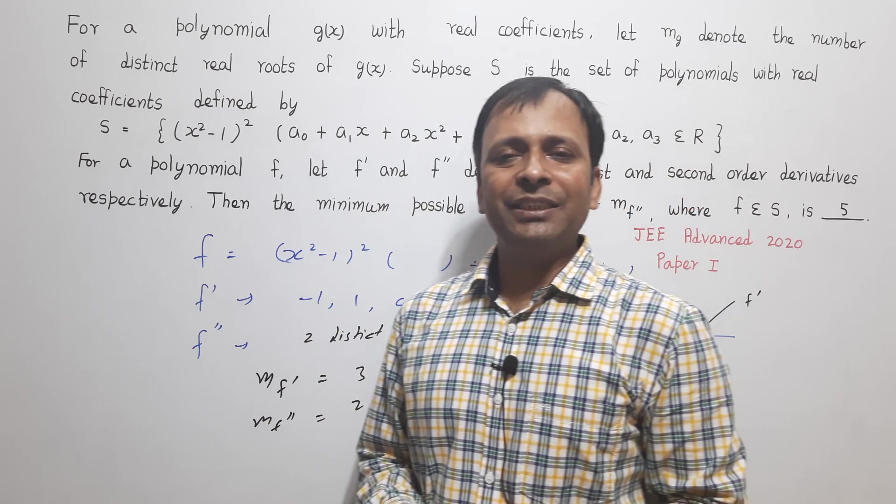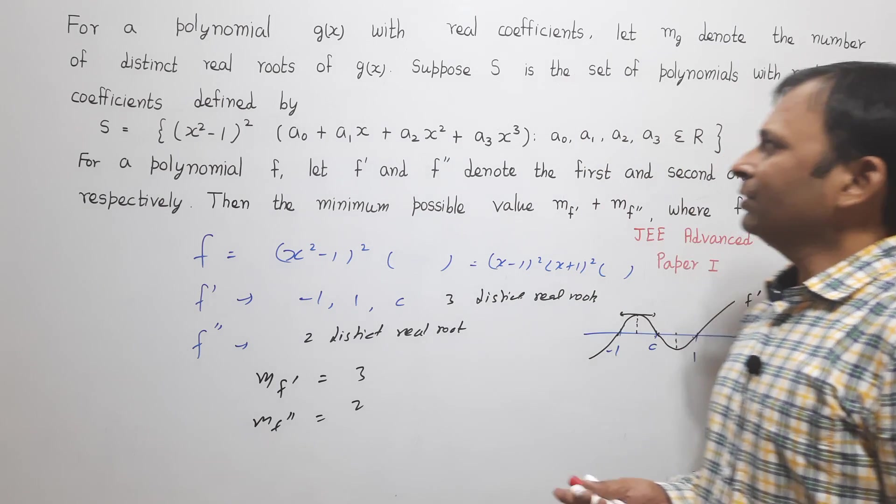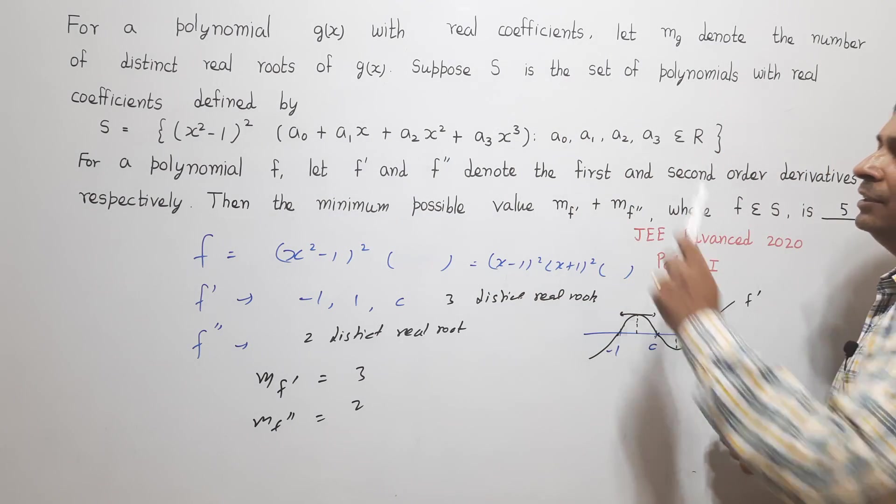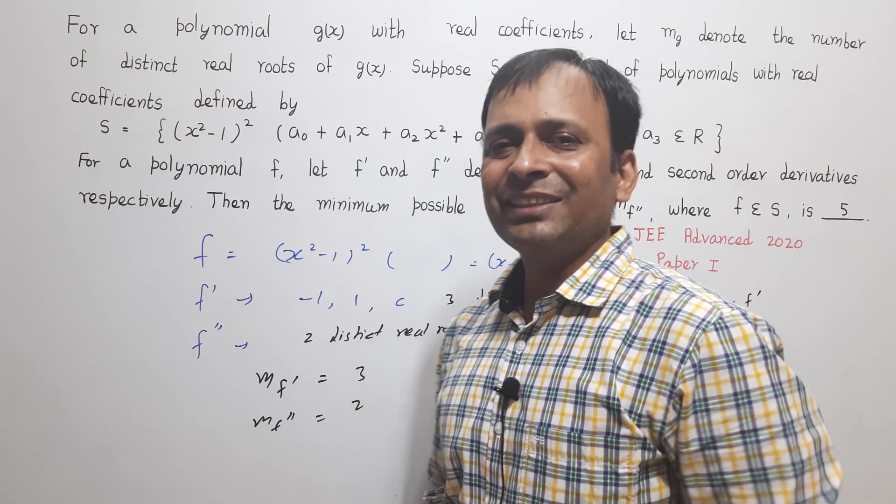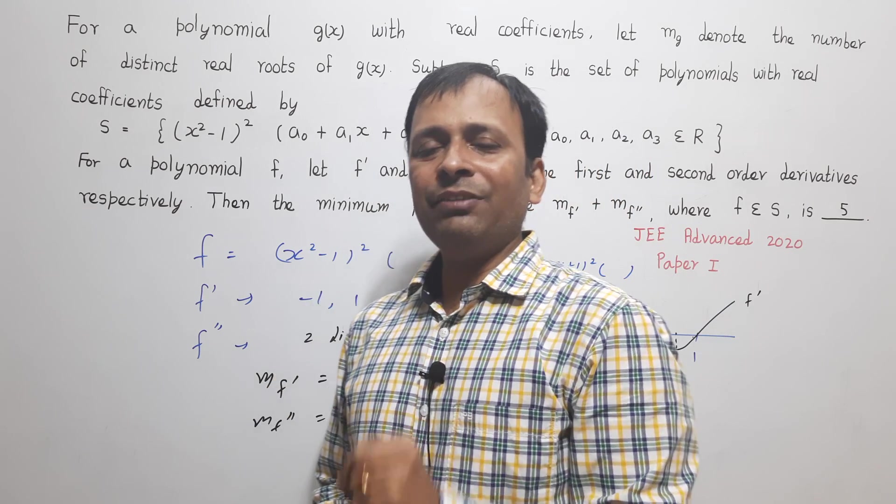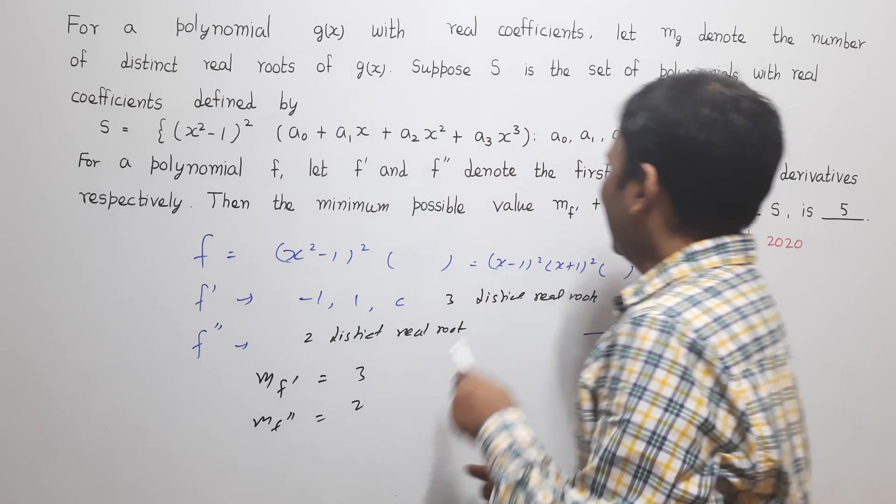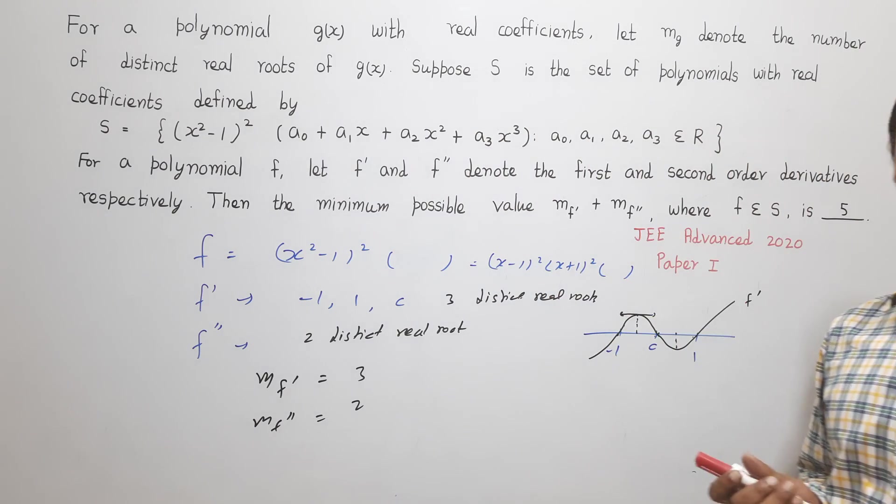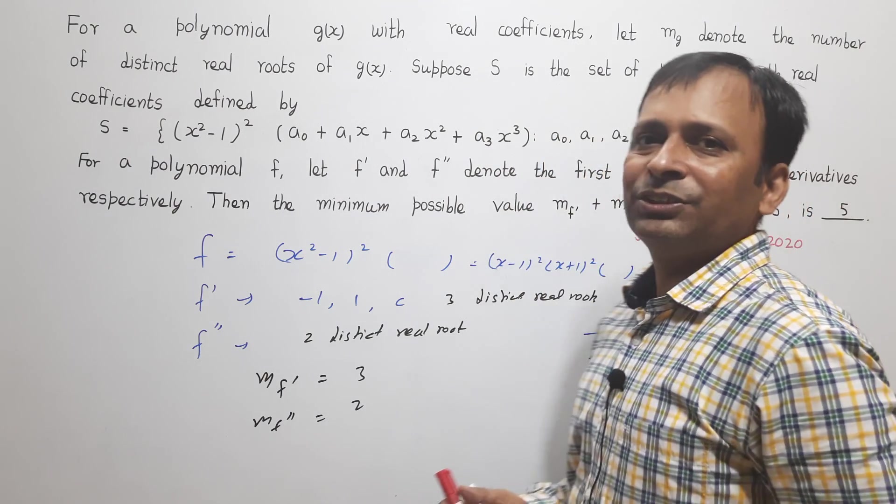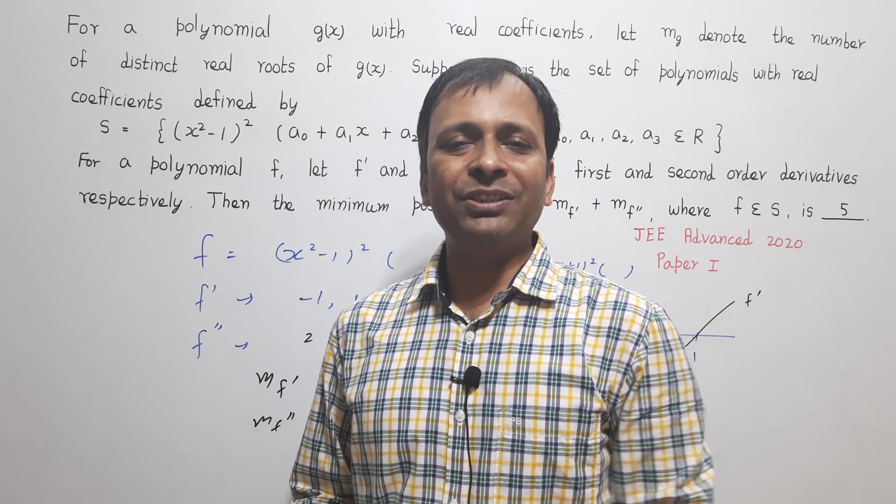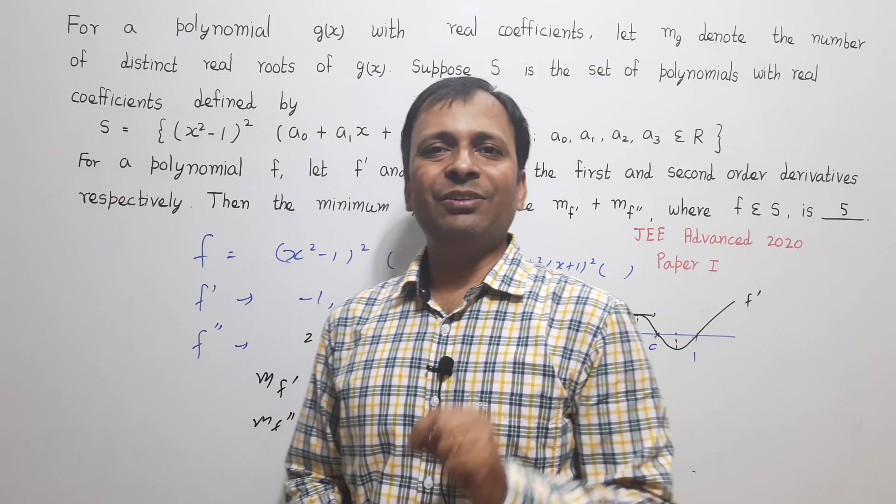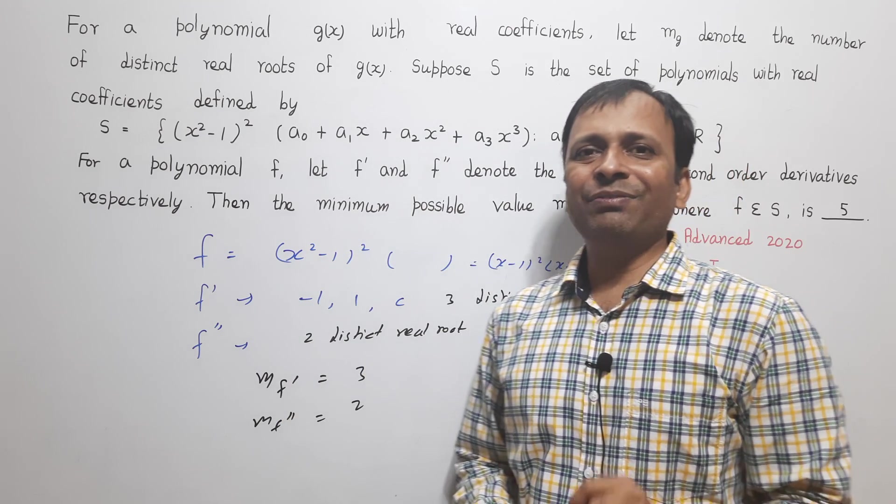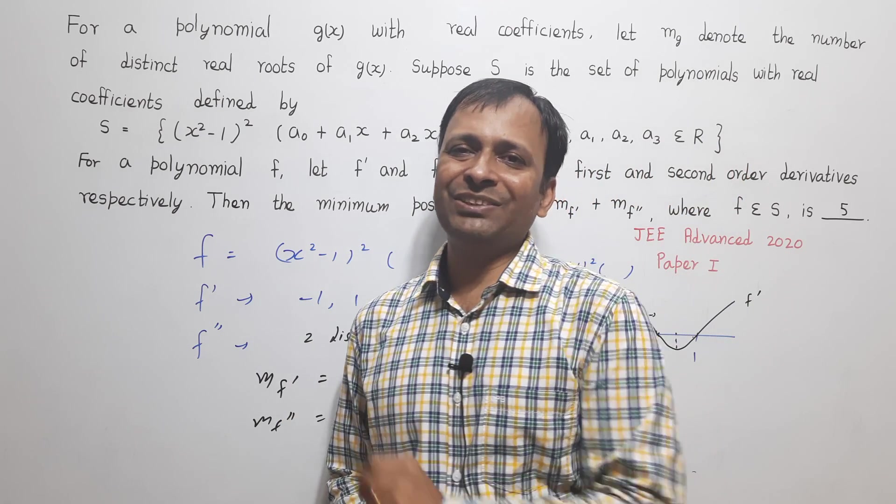Now why I said this question is very debatable is because if we take a₃ as non-zero, then the answer would be different. Now your task is to find out that value of M_f' + M_f'' when a₃ is not equal to zero and write it in the comment box. We will discuss about this question later but let me see who will give me the answer first and we will talk about it later. Hope you have enjoyed this question.